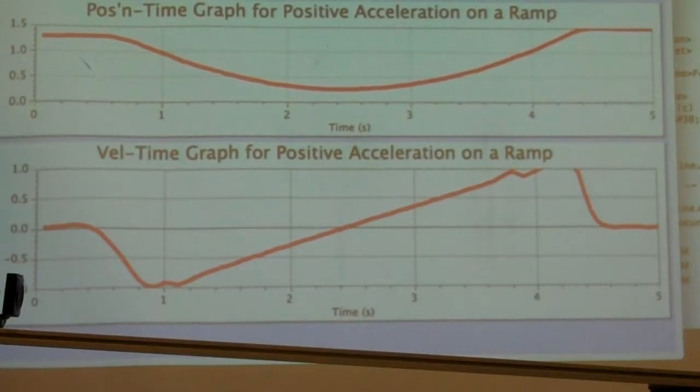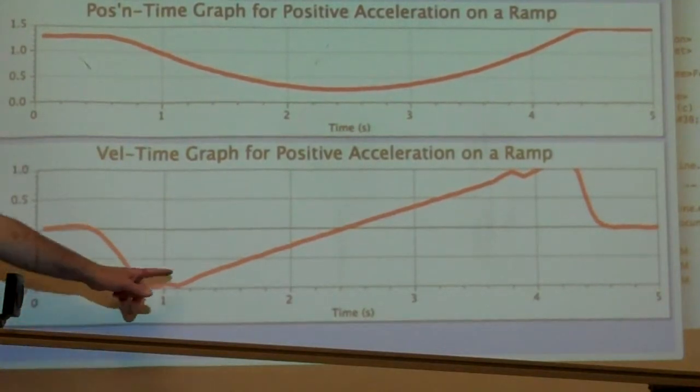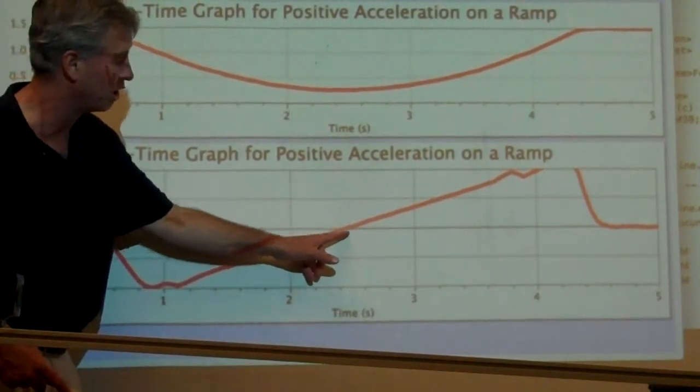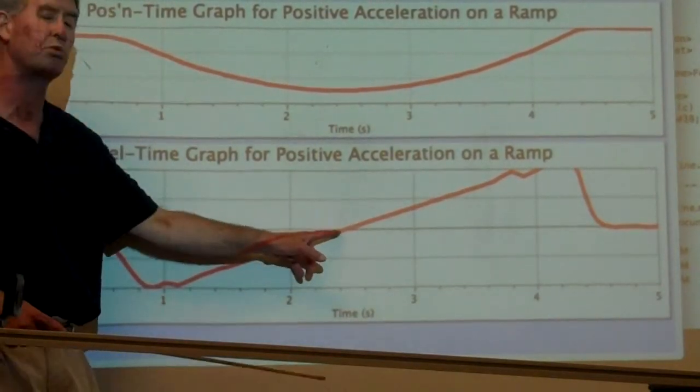Those negative velocity values are indicators the object's got a negative velocity moving in the negative direction, across the screen towards the left in this case. And the line's approaching a velocity of zero at that point.